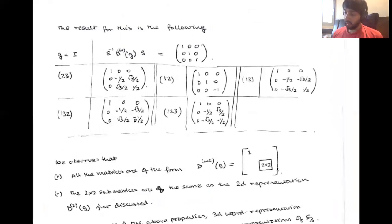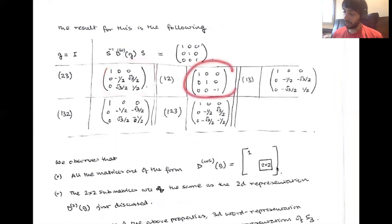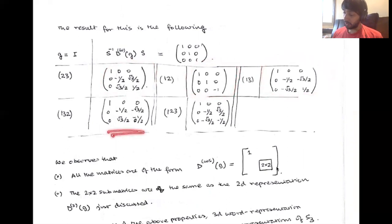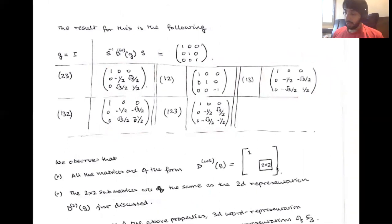For the permutation (2,3) you get this 3×3 matrix; for (1,2) you get this; for (1,3) you get this; and for the rest you get these matrices. What is happening is that all of these matrices have a block diagonal structure — they all have 2×2 blocks. This is the general structure for all of these matrices.